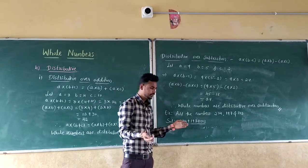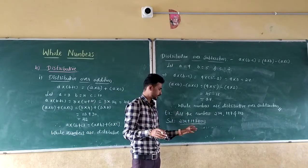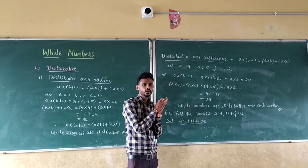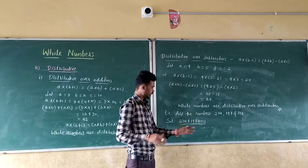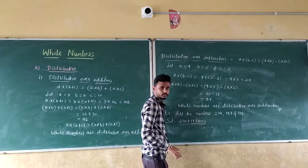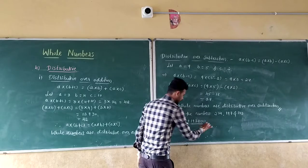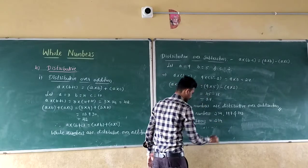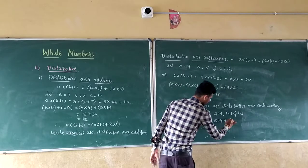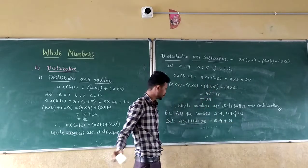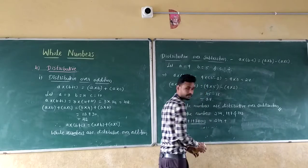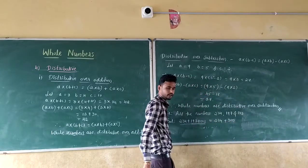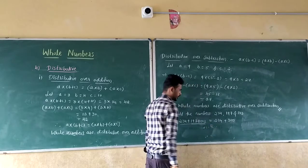While adding — or doing any operation like multiplication, subtraction, or addition — think about how you can make it easier. Here, first add 197 and 103 to get 300, then add 300 plus 234 to get 534. Use rearrangement to decide which numbers to add first to simplify the calculation.